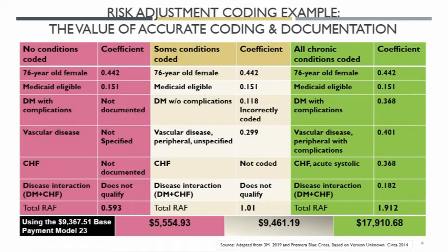On the green side, we had our CDI interaction. We got the diabetes with complications correctly coded. We got vascular disease peripheral with complications — that bumped up the weight. The CHF was specified to acute systolic and coded — we got a nice bump there. We have a disease interaction now that we can claim. So our total payment for this patient will be $17,900 — a big change based on physician documentation, coding accuracy, and clinical documentation intervention.